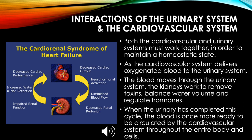Interactions of the urinary and cardiovascular systems: Both systems must work together to maintain homeostasis. The cardiovascular system delivers oxygenated blood to the urinary system. As blood moves through the urinary system, the kidneys remove toxins, balance water volume, and regulate hormones. Once the cycle is complete, the blood is ready to be circulated by the cardiovascular system throughout the entire body and cells.